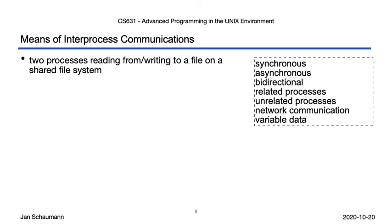So what are our options for two processes to communicate? If you're on the same system, one process can open a file, write some data, and the other process can open the file and read the data — using the file system as an inter-process communications medium. This allows for asynchronous communications. There's no good way to notify the other process of new data being available, but it's bidirectional, it allows communication between both related and unrelated processes, though it only works on the same host. This method also allows for variable data to be exchanged, meaning there's no real limit on what data you communicate.